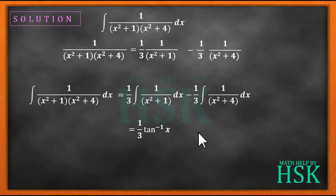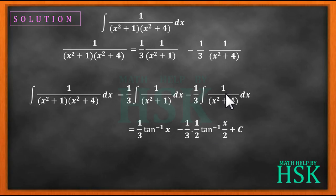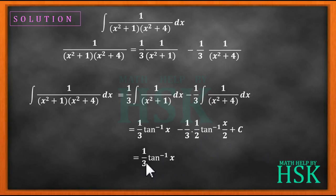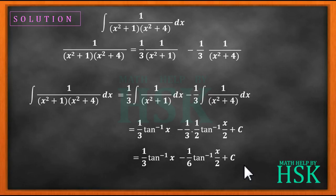For the second integral, we write 4 = 2², so a = 2, giving −(1/3)·(1/2)·tan⁻¹(x/2), which simplifies to −(1/6)·tan⁻¹(x/2). Therefore the final answer is (1/3)·tan⁻¹(x) − (1/6)·tan⁻¹(x/2) + C.